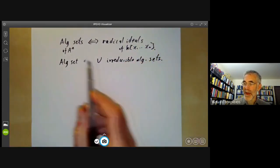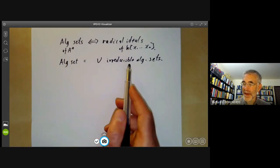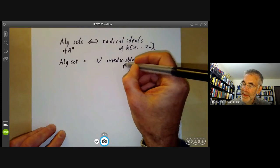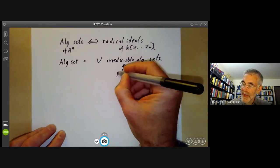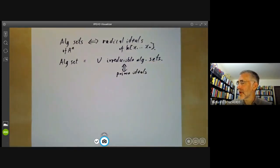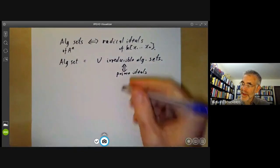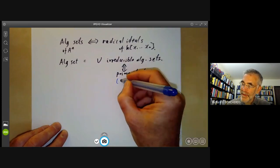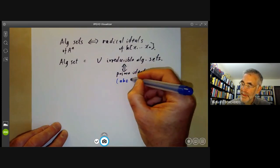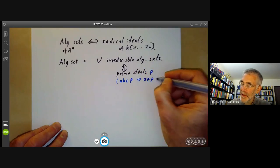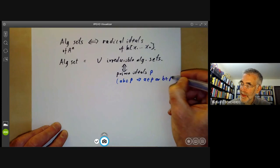Now algebraic sets correspond to radical ideals. The irreducible algebraic sets correspond to prime ideals. Just to remind everybody that a prime ideal is called prime if a·b in the prime ideal p implies a is in p or b is in p.